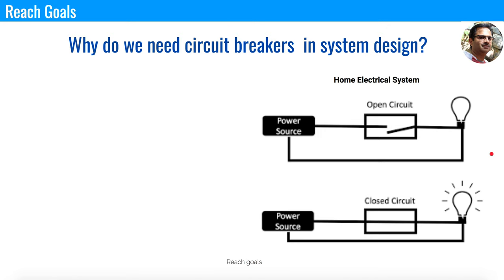You would have noticed circuit breakers in your home electrical appliances. For example, if the load of the electric current goes high, in order to protect your electrical devices, the circuit breaker trips — that means it opens the circuit and doesn't allow the electric current to pass into your existing system, and in that way you preserve or protect the existing system.